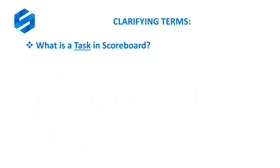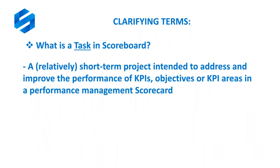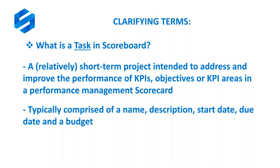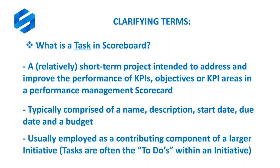Moving on to another important term: what is a task in Scoreboard? A task is a relatively short-term project intended to address and improve the performance of your KPIs, objectives, and areas within your performance management scorecard. It's effectively like a junior initiative — an initiative light. Tasks are typically comprised of a name, description, start date, due date, and budget, and are usually employed as contributing components of a larger initiative.